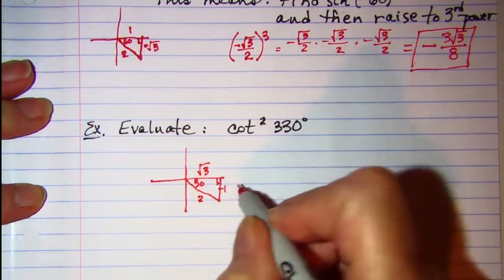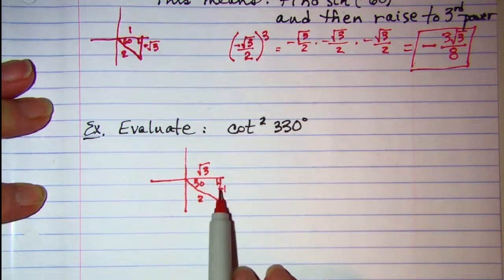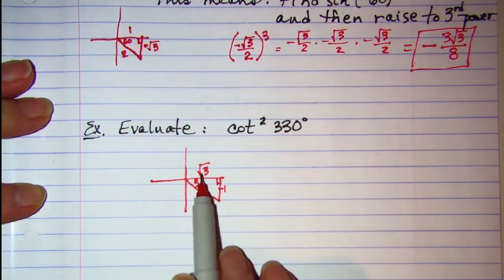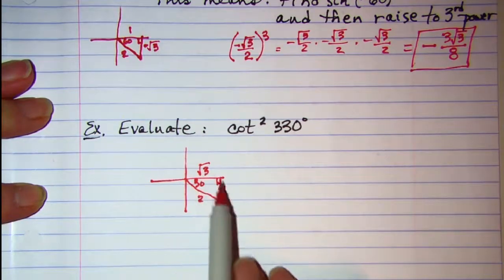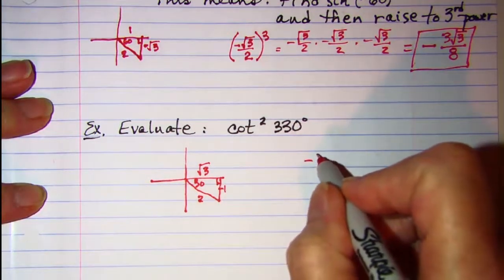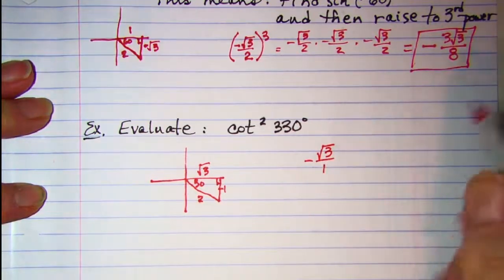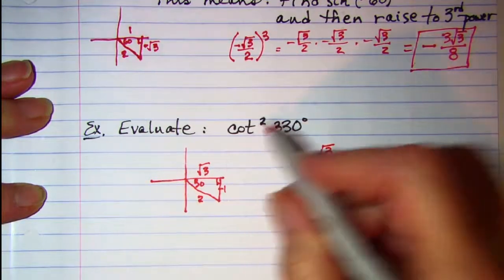The side down is negative. Now tangent is opposite over adjacent, so cotangent is the reciprocal of that, which means it's √3 over negative 1. And then I want to square that.